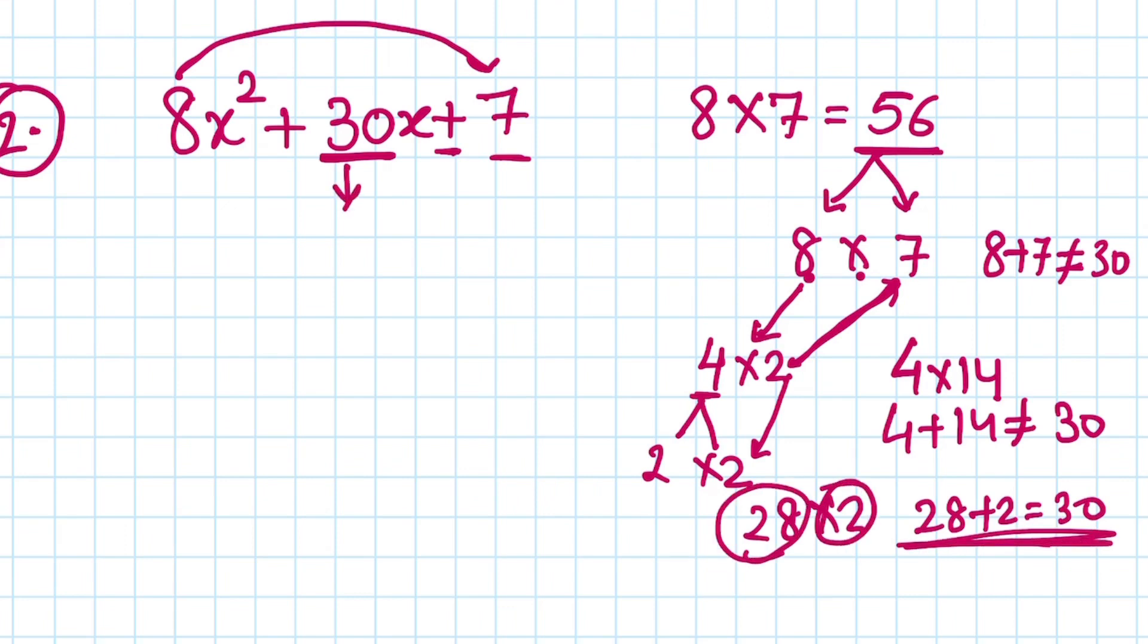So now we divide 30 into 28x plus 2x, and the other terms stay as they are. Now we draw a barrier between 8 and 28 and see what we can take common. We can take 4 common and x common.